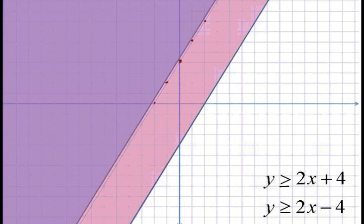Greater than or equal to or less than or equal to is a solid line. Greater than or less than is a dashed line.